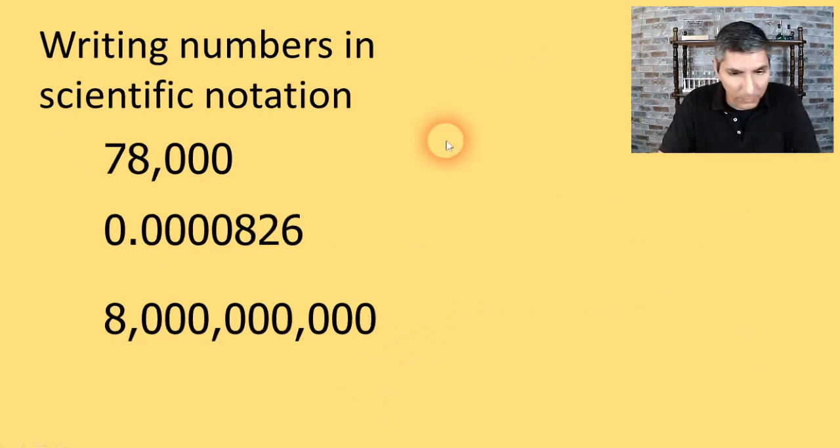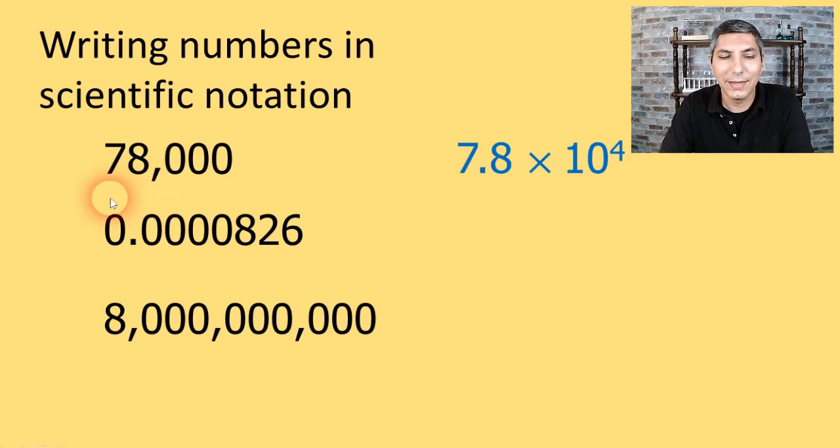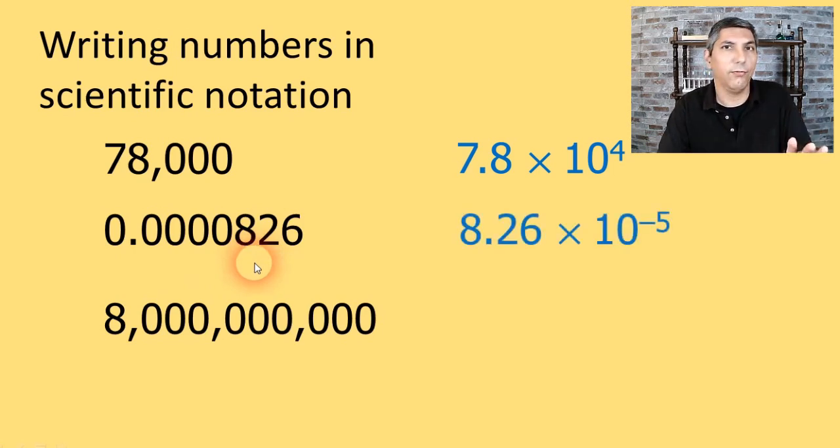Now, let's do some practice here. So here we have these three numbers. We'll start with 78,000. And once again, we have to move this decimal point over four places. So it becomes 7.8 times 10 to the fourth. How about this next number? Well, we have to move it over one, two, three, four, five places. So this is 8.26 times 10 to the negative fifth, because this is a small number.